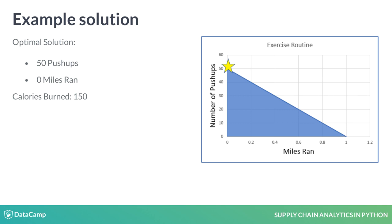Points in the blue area of the graph all satisfy the constraints. To find an overall point that maximizes the calories burned, you could randomly test the shaded area, but that would take a long time. In our next lesson, we will explore how to solve similar problems in Python. In this example, the optimal solution is 50 push-ups and 0 miles.